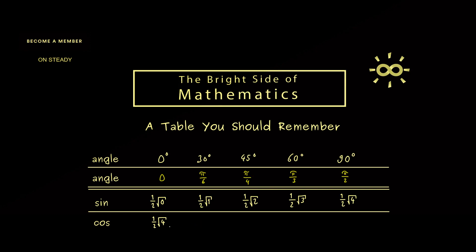We have 1/2 square root of 4 for 0, and for π/6 we have 1/2 square root of 3. Then 1/2 square root of 2, the same as for the sine. And 1/2 square root of 1 for 60 degrees and 1/2 square root of 0 for 90 degrees.